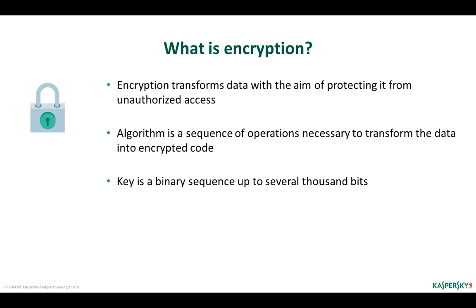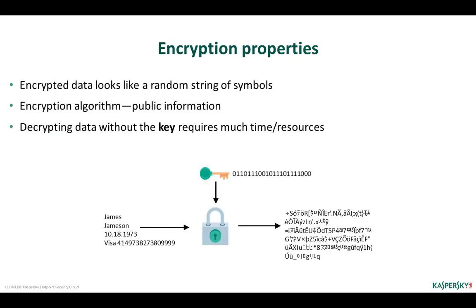A key is a binary sequence whose length ranges from tens to thousands of bits. Key length depends on the employed algorithm. This schema — where the data transformation algorithm is known and only the key is secret — is more flexible. If a key leaks, it is sufficient to change the key without changing the algorithm. When evaluating reliability of an encryption algorithm, the algorithm is considered to be widely known and only the key is considered to be secret.